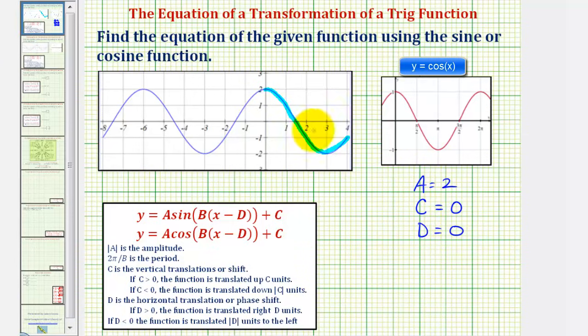So the last thing we need to find is b, where two pi divided by b is equal to the period. And again, we can't tell the period looking to the right of the y-axis, so let's look on the left side.